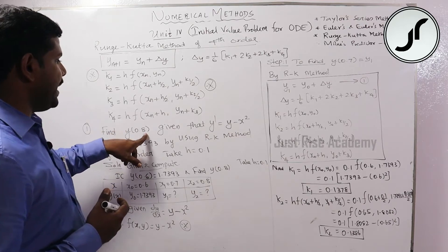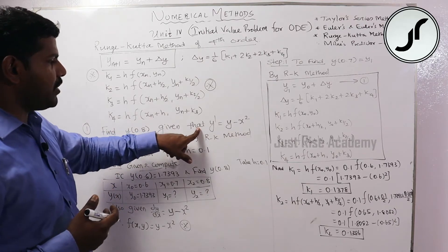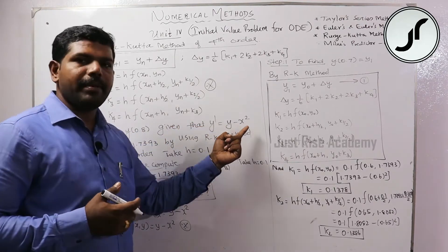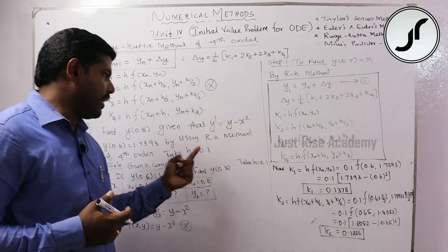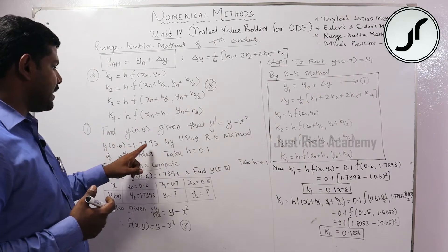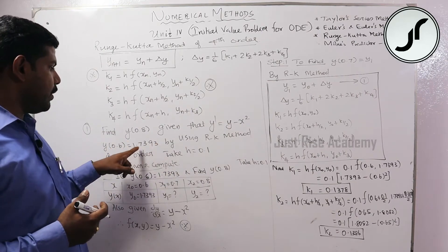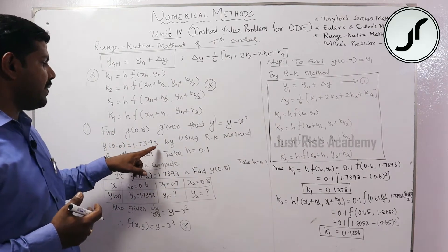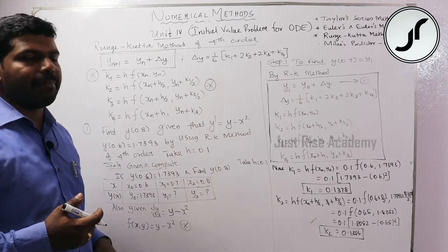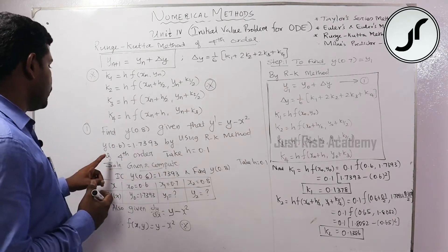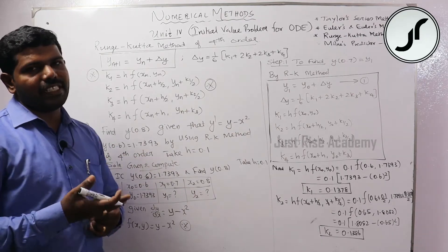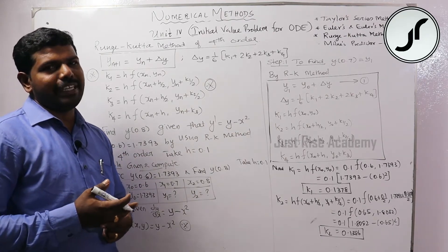Find y(0.8) given that dy/dx equals y minus x squared, with y(0.6) equal to 1.7393, by using RK method of fourth order. Take h equal to 0.1.